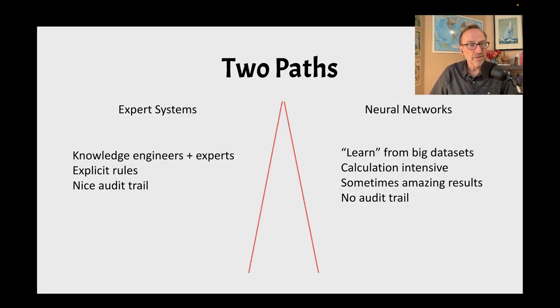The expert systems were interesting because you would sit a knowledge engineer down with a domain expert. They would craft a series of explicit rules, like if you have a chill. This left a nice audit trail when the expert system made a recommendation, because you could then figure out which rules had been triggered.